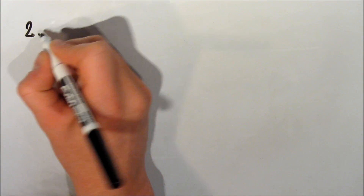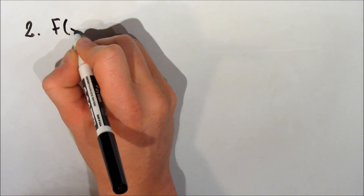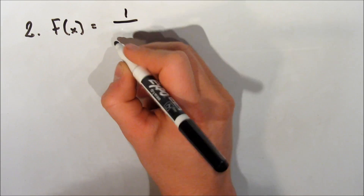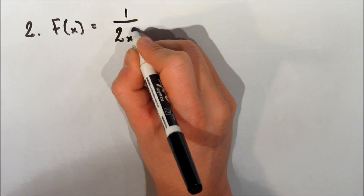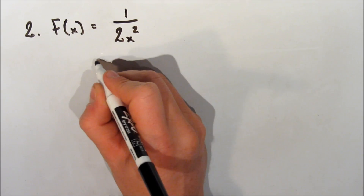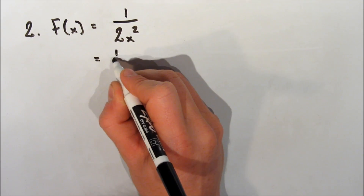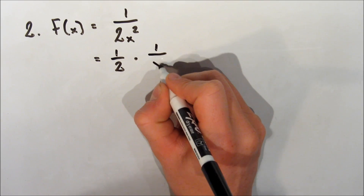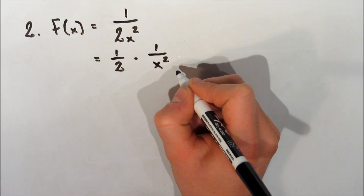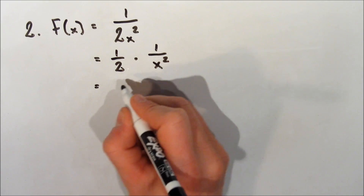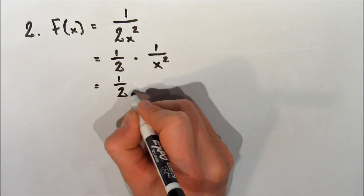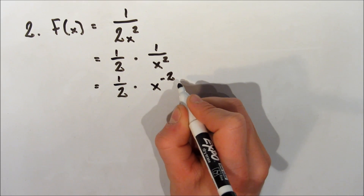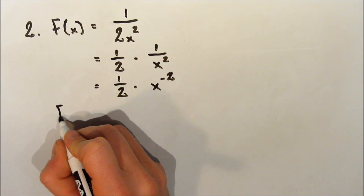Let's take a look at another example of a function with a fraction in it. We're looking at the function f of x is equal to 1 over 2 times x squared. We're going to do the same thing as in the other example — multiply 1 half by 1 over x squared and break up the function that way. We can write the function as 1 half multiplied by x to the exponent negative 2.